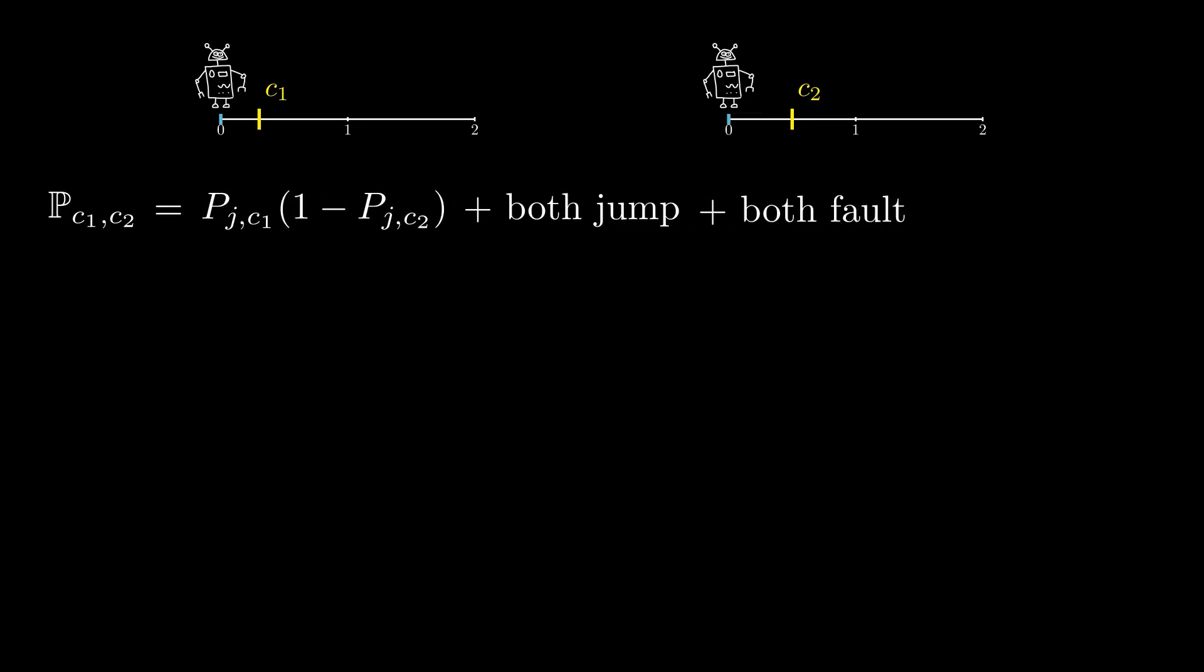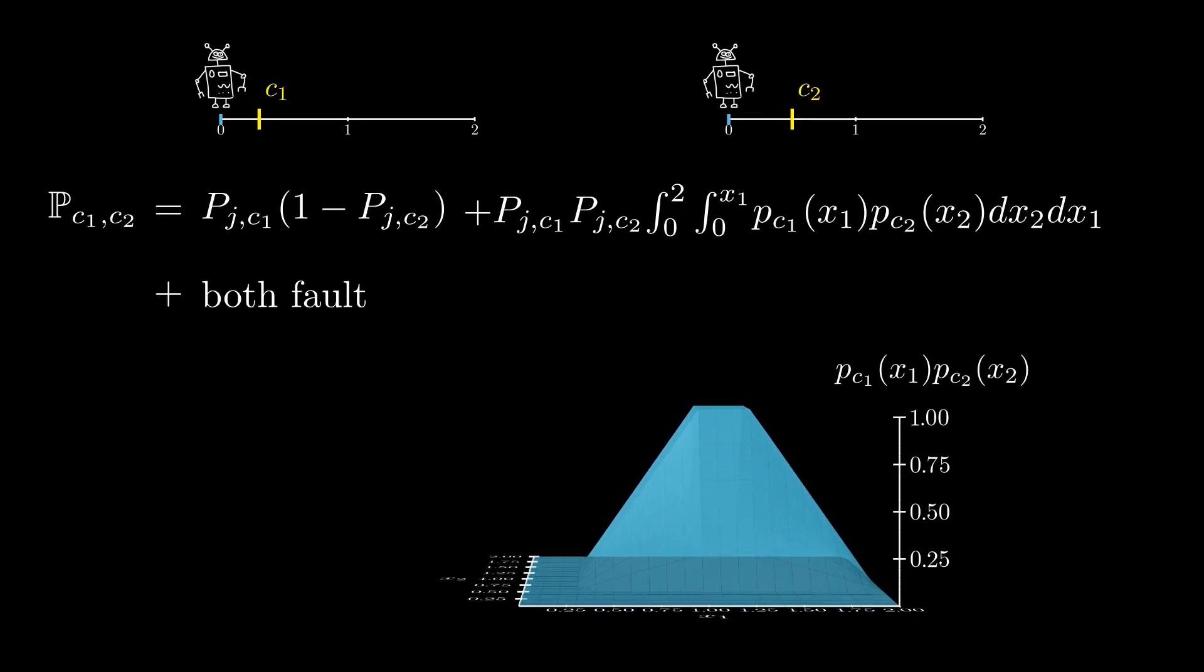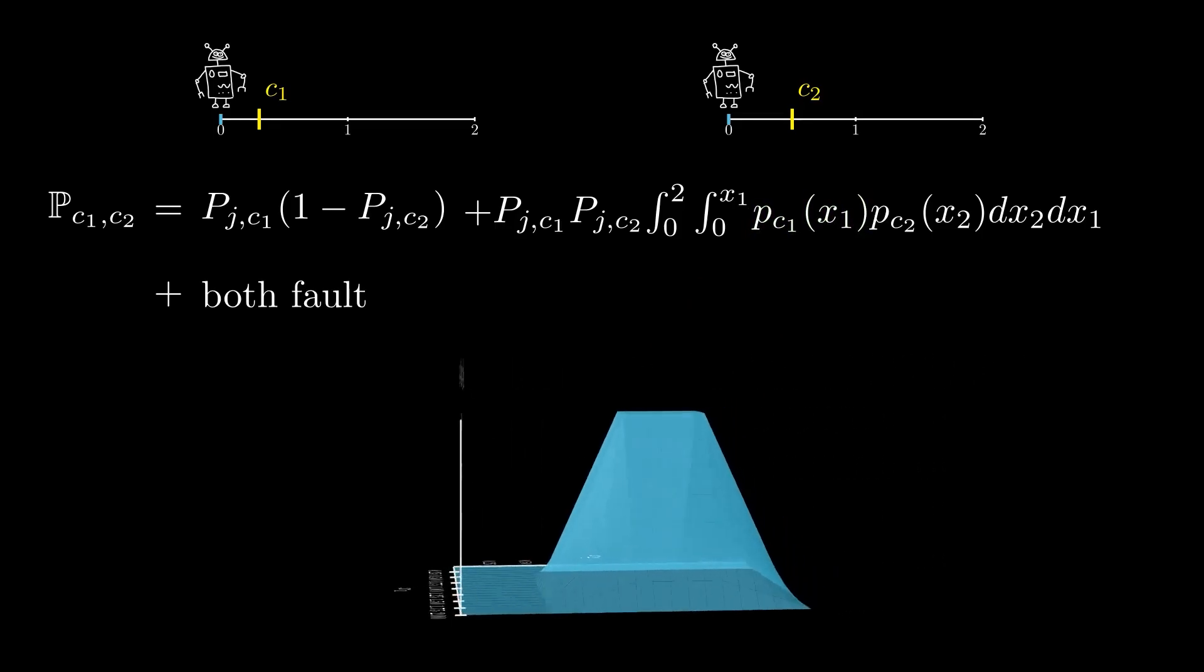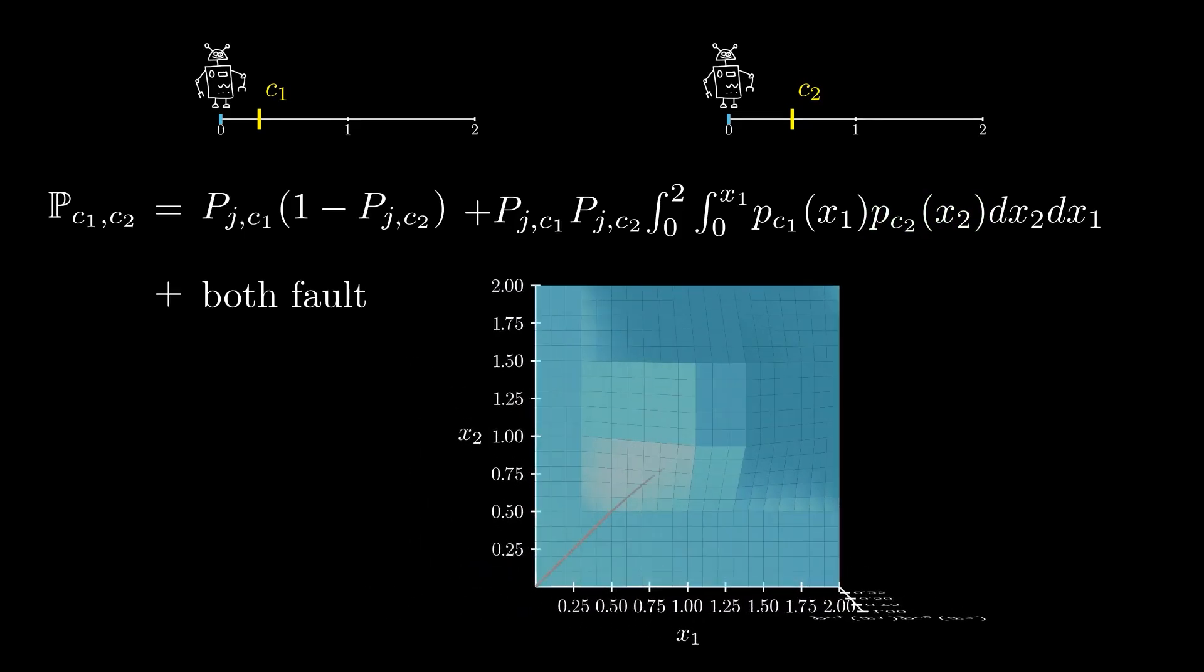We use the jump probability to calculate the first term. The second term starts with the probability that both robots jump times the probability that player 1 jumps further. The second half comes down to looking at the probability of all of the possible pairs of jump scores. Since each robot's jumps are independent from one another, the probability of the pair (X1, X2) is given by the probability that Robot 1 scores X1 times the probability that Robot 2 scores X2. Then we just integrate over all of the probabilities where Robot 1 out jumps Robot 2, highlighted in green.